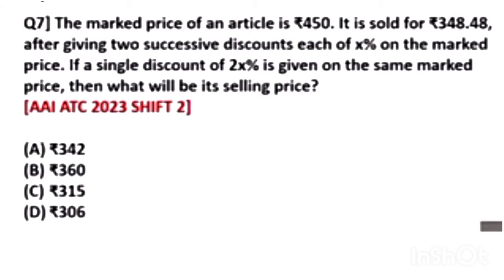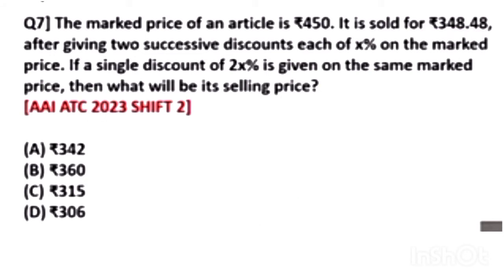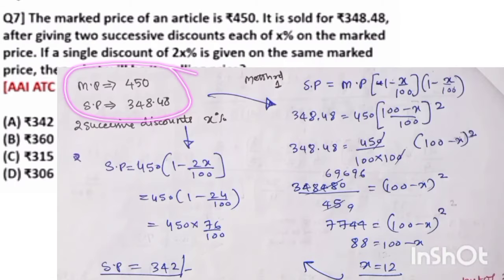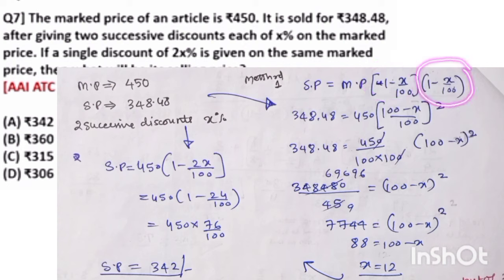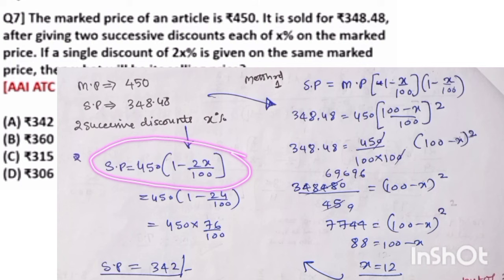Now a tough question from the 2023 ATC paper. Marked price is 450 and it is sold for 348.48 after two successive discounts of the same rate x%. So: 450 × (1 − x/100) × (1 − x/100) = 348.48 — solve this to find x. In the second part, if a single discount of 2x% is given, the selling price is 450 × (1 − 2x/100).